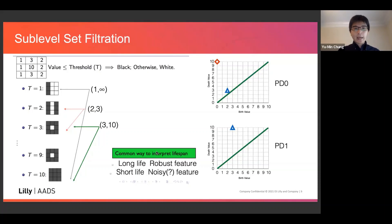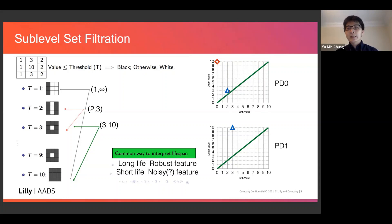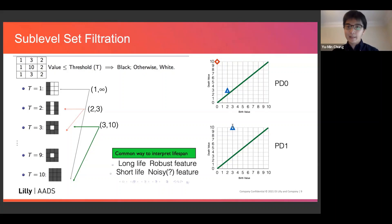Here is a quick recap of the persistent diagram. For a simple three-by-three image, if you go through the sub-level set filtration, you get a persistent diagram. The zero-level and first-level persistent diagrams show, for example, a one-dimensional generator born at three and dying at ten. That's the sub-level set filtration and the resulting persistent diagram.